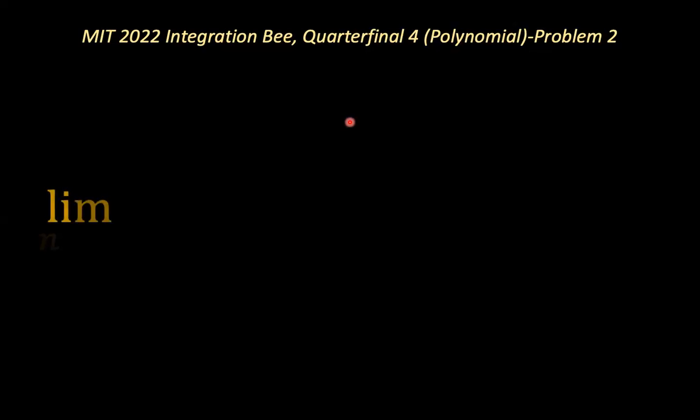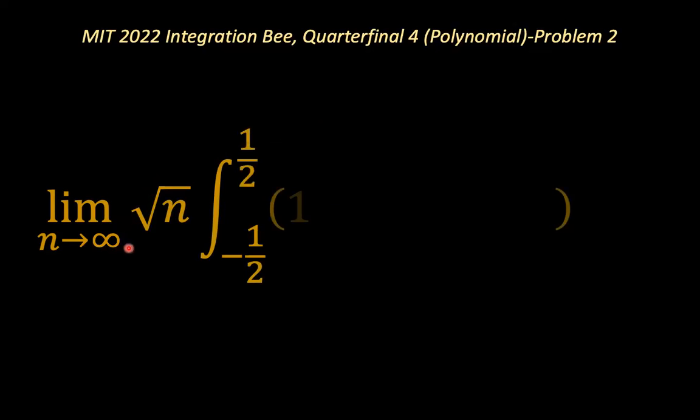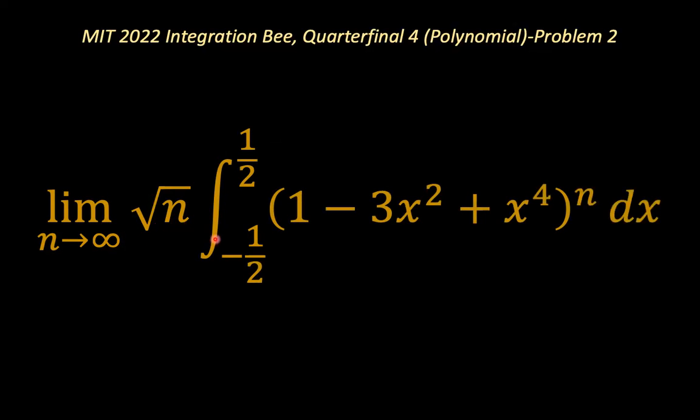We would like to group these questions into the polynomial category. It's more complex than that, but for convenience's sake we'll take this as a polynomial question. Our problem is the limit as n tends to infinity of the product of the square root of n and the integral from x equals negative one-half to positive one-half of the bracket 1 minus 3x squared plus x to the power of 4, close bracket, to the power n. It's a very interesting problem — it looks intimidating, but at the end of this session I hope you get to see some technique in solving such problems.